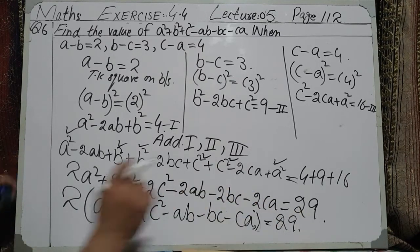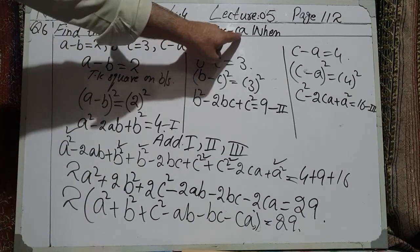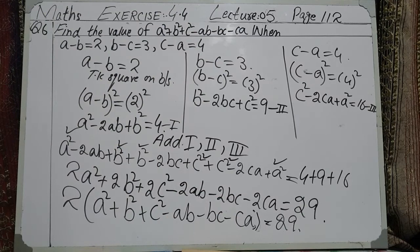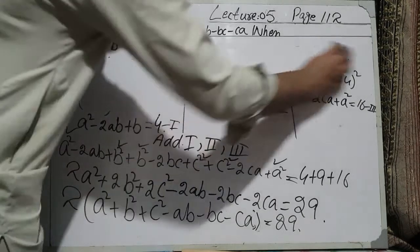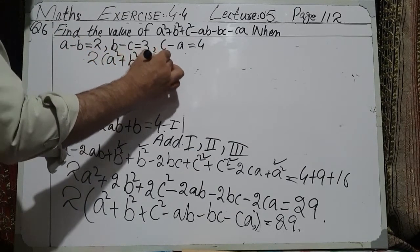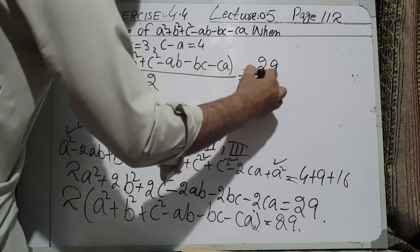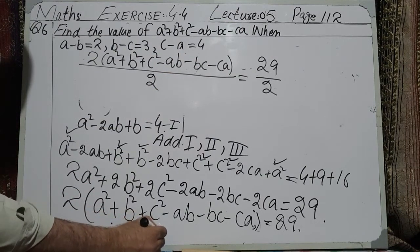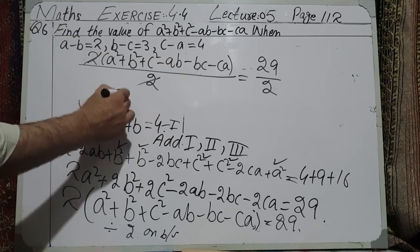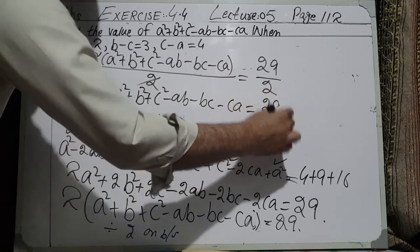Now we need to find the value of A square plus B square plus C square minus AB minus BC minus CA. We have a factor of 2 on the left side, so we divide both sides by 2. This gives 2 into A square plus B square plus C square minus AB minus BC minus CA, divided by 2 on both sides.